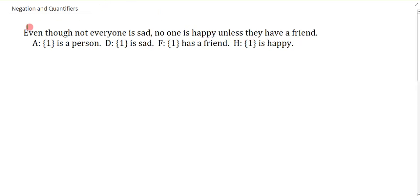Well, even though is one of those phrases that signifies a binary connective, and it pairs with this comma. The binary connective is a conjunction. Most things like this just mean and. So it says, not everyone is sad and no one is happy unless they have a friend.